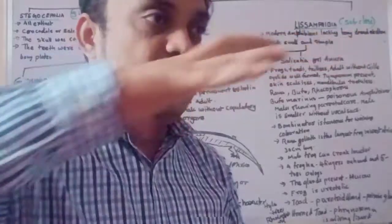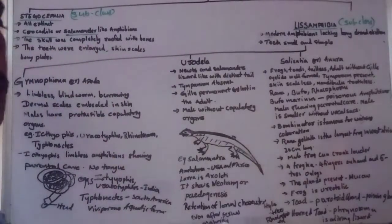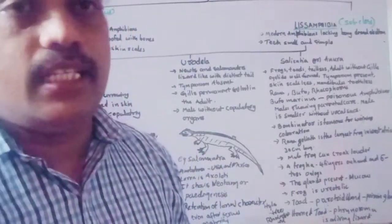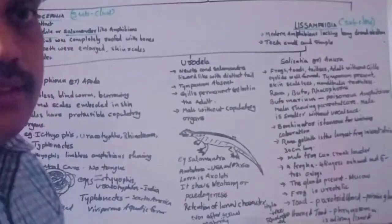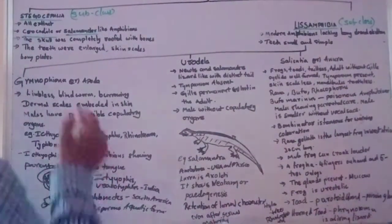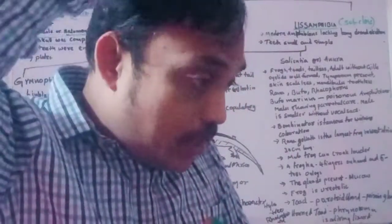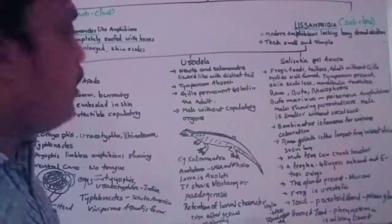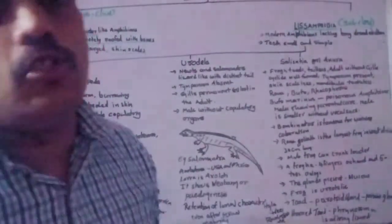The Stegocephalia looked like lizards and crocodiles, and also like salamander-like amphibians. They are completely extinct. Their skull was completely roofed with bones — a well-developed skull fully covered with bones. The teeth were very large, and the skin had scales and bony plates. Even the head was covered with bony scales.